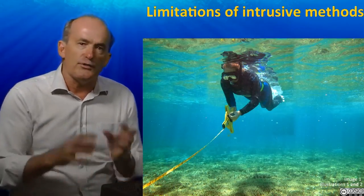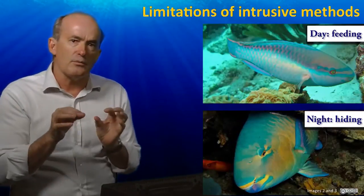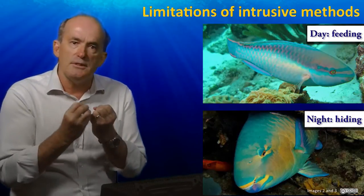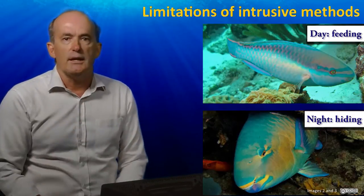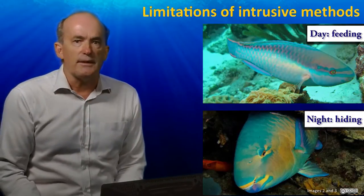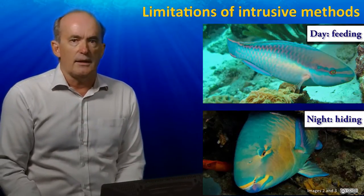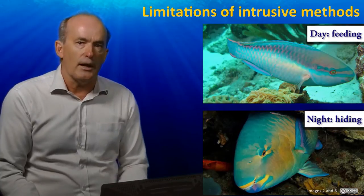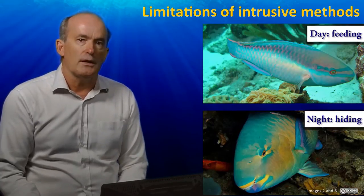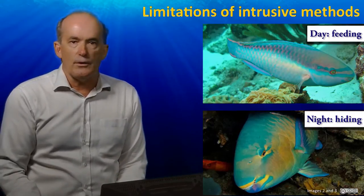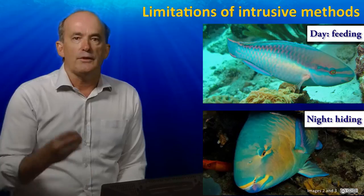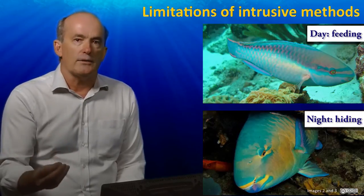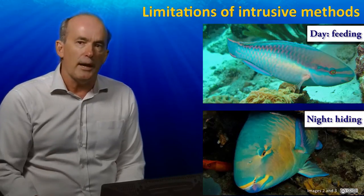The second problem is that mobile organisms like fish may behave differently at different times of the day. In this case, differences may arise in the number of fish observed simply because of the time of day or night when the measurements were made.